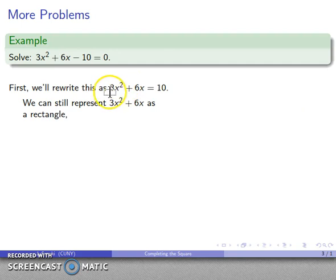We can represent both sides of this equation as areas of geometric figures. The 3x² + 6x can be represented as a rectangle. The first term 3x² is x by 3x, and the second term 6x is 6 by x. They have the same width, so I can attach them to each other. There's my 3x² + 6x rectangle, and that has area equal to 10.